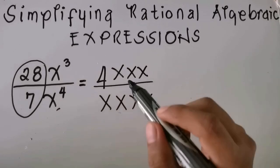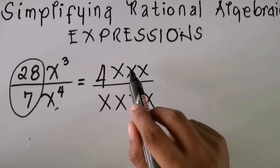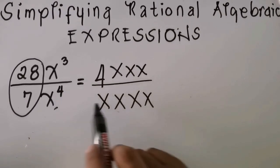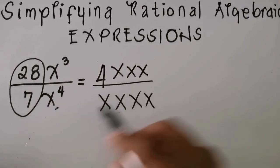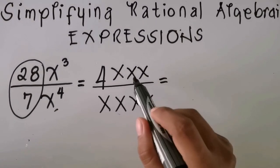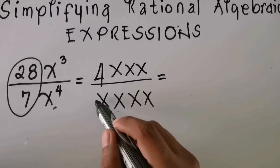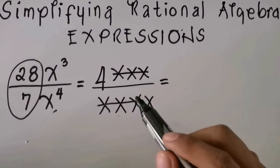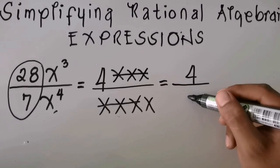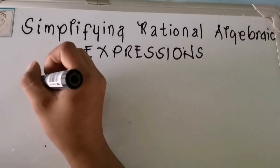As you can see, x cubed means x times x times x, and x to the fourth power means x times x times x times x. We cancel the three x's in the numerator with three of the x's in the denominator. What remains is 4 in the numerator and x in the denominator. So the answer is 4 over x.